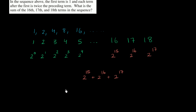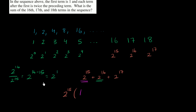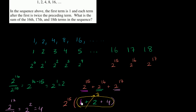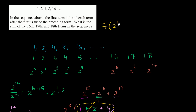So if you factor out a 2 to the 15th power, this is going to be 2 to the 15th times: 2 to the 15th divided by 2 to the 15th is just 1. 2 to the 16th divided by 2 to the 15th — that's equivalent to 2 to the 16 minus 15, which is just 2 to the first, which equals 2. And 2 to the 17th divided by 2 to the 15th is equal to 2 to the second power, or just 4. So this simplifies to 1 plus 2 plus 4, which is 7, giving us 7 times 2 to the 15th power.